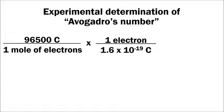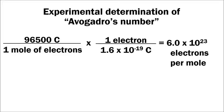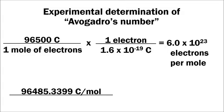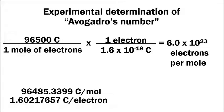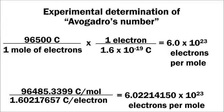Taking the Faraday constant — 96,500 coulombs per mole of electrons — and multiplying by the conversion factor that cancels out coulombs gives the number of electrons per mole. Using those values we get 6.0 × 10²³. With more precise values for both the Faraday constant and the electron charge, the calculation yields a much more precise estimate of Avogadro's number. We typically say 6.02 × 10²³, even though it can be expressed with many more significant digits.